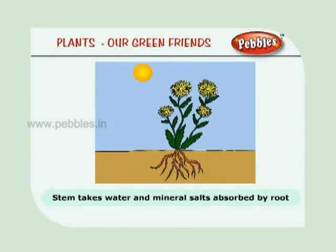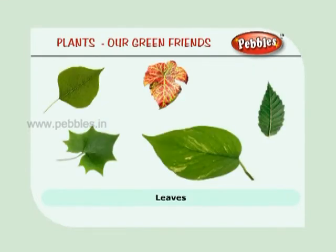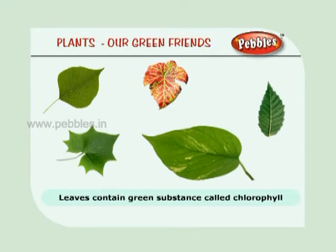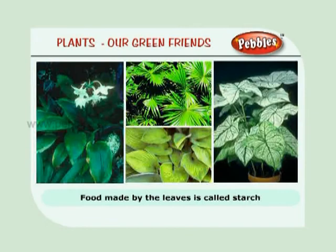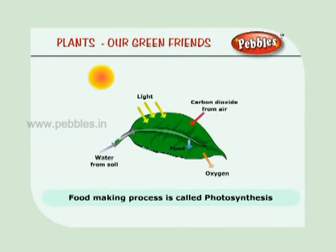Just like how we drink with a straw. Leaves are a very important part of a plant. They contain a green substance called chlorophyll. Chlorophyll helps to make food for the plant. The food made by the leaf is called starch.